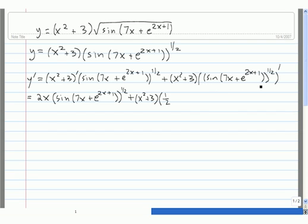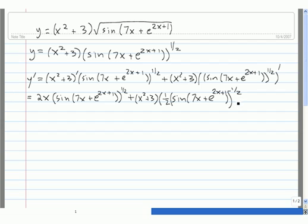Using the chain rule, we take the derivative of the outside evaluated at the inside: 1/2 times sine of 7x plus e to the 2x plus 1, raised to the negative 1/2 power. Then we multiply by the derivative of the inside function — the derivative of sine of 7x plus e to the 2x plus 1.